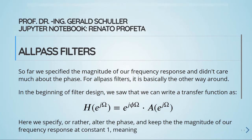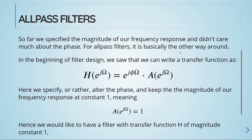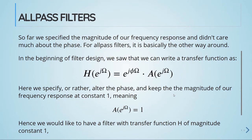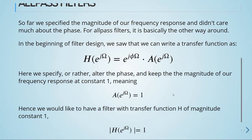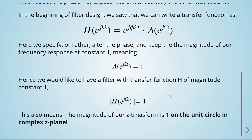In the beginning of filter design we saw that we can write a transfer function with this equation here. So here we specify, or rather alter, the phase and keep the magnitude of our frequency response at the constant one. Hence we would like to have a filter with a transfer function H of magnitude constant one, meaning the magnitude of the transfer function is equal to one. This also means that the magnitude of our z-transform is one on the unit circle in the complex z-plane.